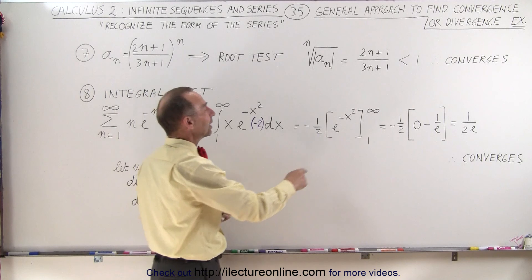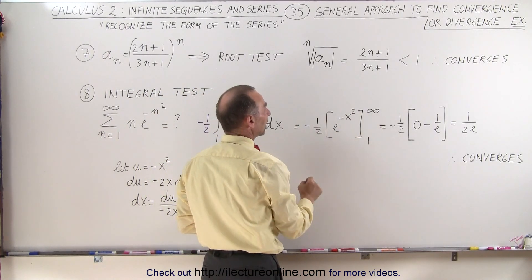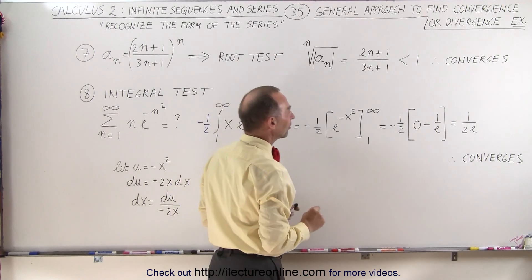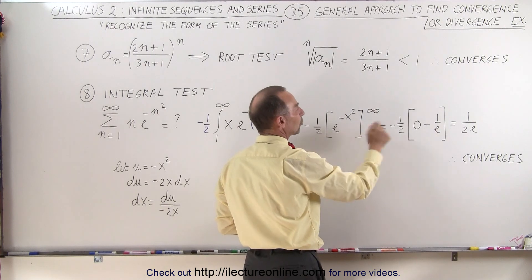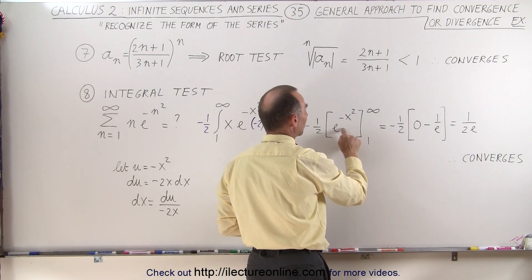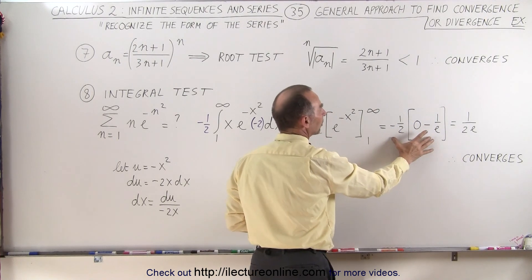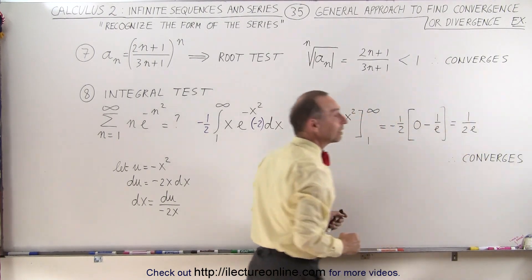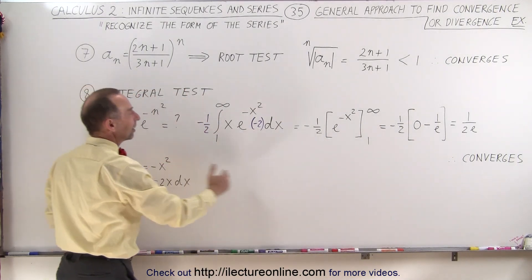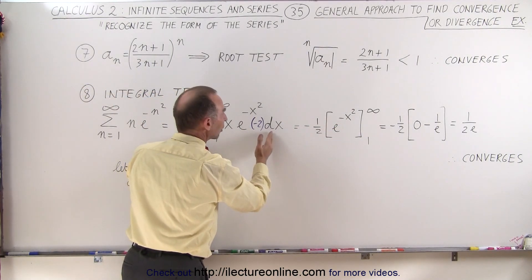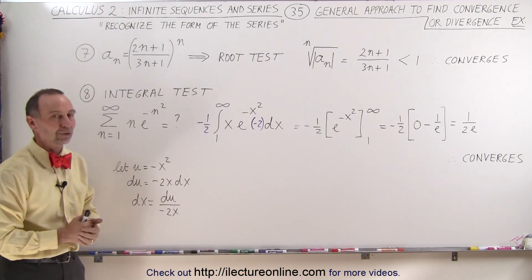If we integrate that, we get e to the minus x squared, evaluated from 1 to infinity, with the minus one-half still in front. Plugging in the upper limit gives 1 over e to the infinity squared, which is 0. Plugging in the lower limit gives e to the minus 1, which is 1 over e. Multiplying through, we get 1 over 2e. So the integral equals 1 over 2e, and therefore we know the series converges as well.